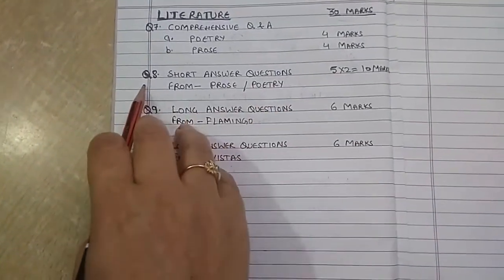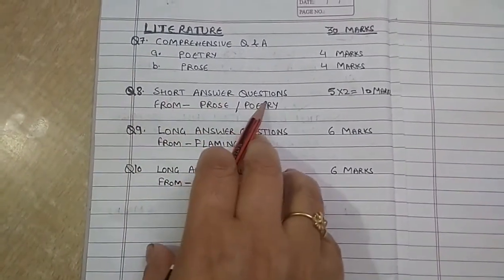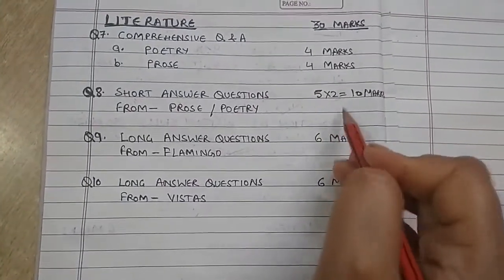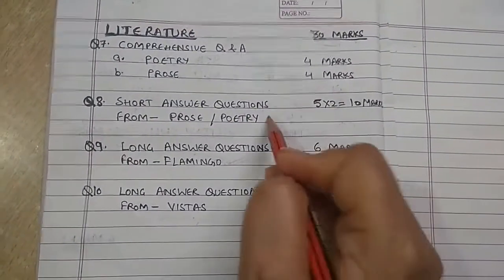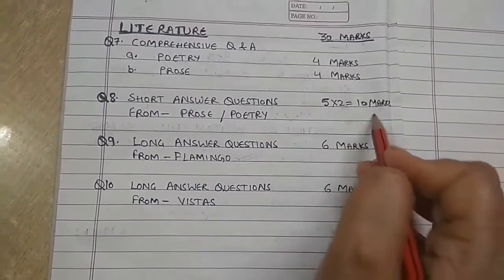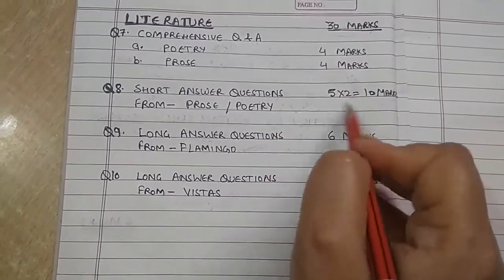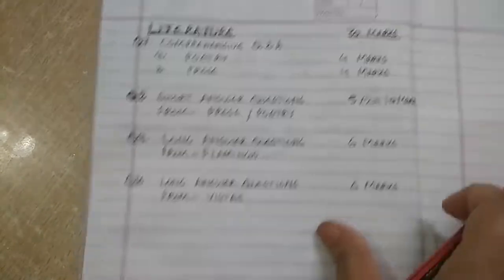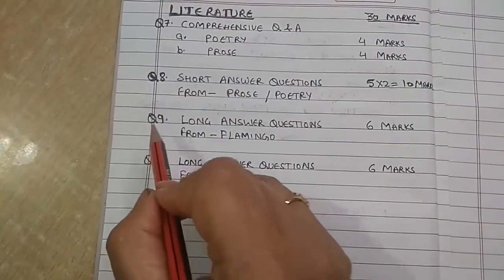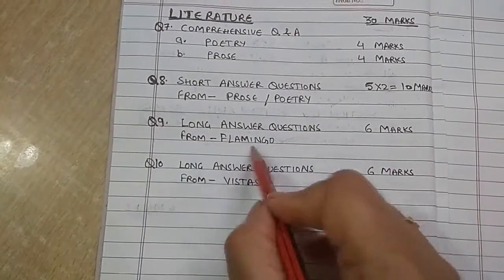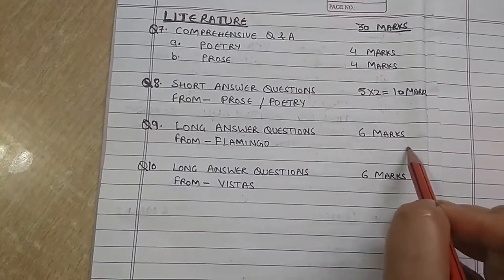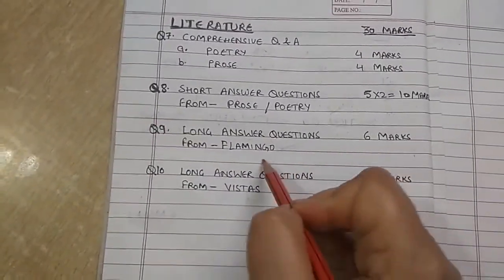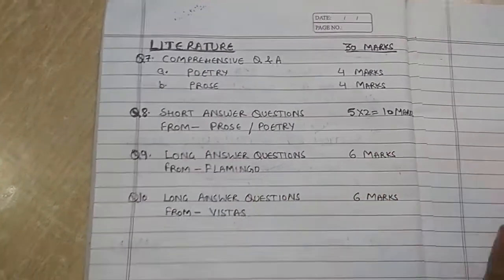Question number 8 is short answer type questions and you will get 7 questions. Out of 7, you have to attempt only 5 questions, and for attempting 5 questions you will get 10 marks. These questions can come from either prose or poetry. Question number 9 is a long answer type question and is of 6 marks. For these 6 marks, you have to prepare long answer questions from your book, Flamingo.